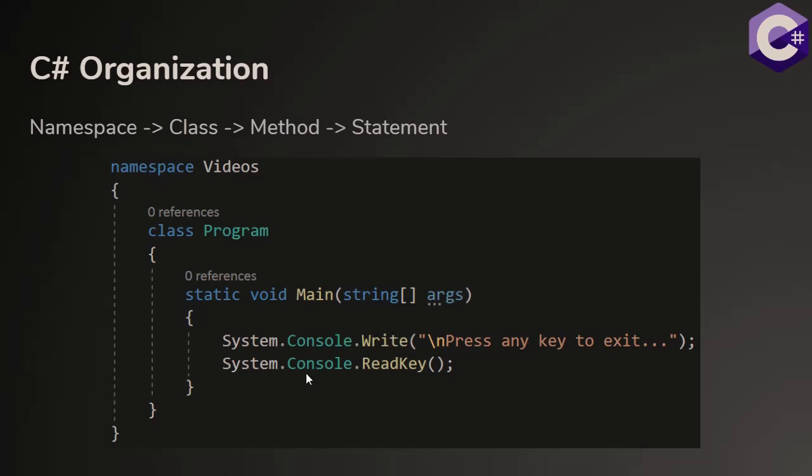When we write our programs, any method can use any other method as long as we know the namespace, the class, and the method name. So our main method inside the program class inside the video's namespace here is using the write method inside the console class inside the system namespace.